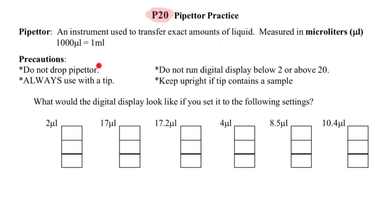The precautions would be: do not drop the pipetter, always use with a tip, do not run the digital display below 2 or above 20 because we are using P20. The range of volumes it can work with would be between 2 and 20 microliters. You also have to keep the tip upright when it contains a sample.